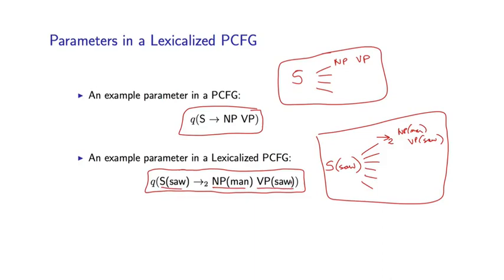We have one parameter for every possible lexicalized rule. We're going to have to be very careful in how we estimate the parameters of these models. But we'll see that the smoothing techniques you saw for language modeling in the very first segment of this course can be applied very directly to this problem.